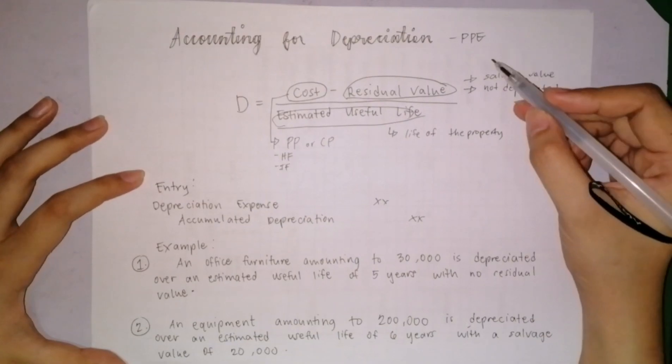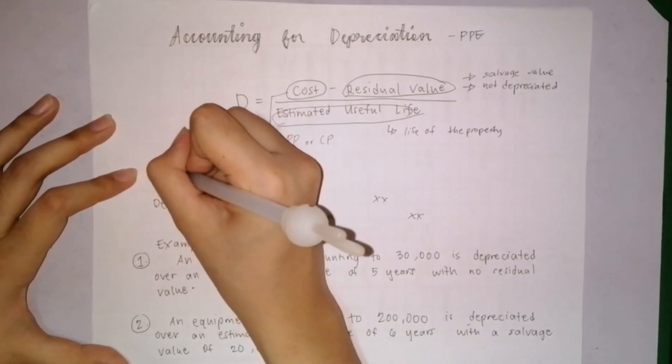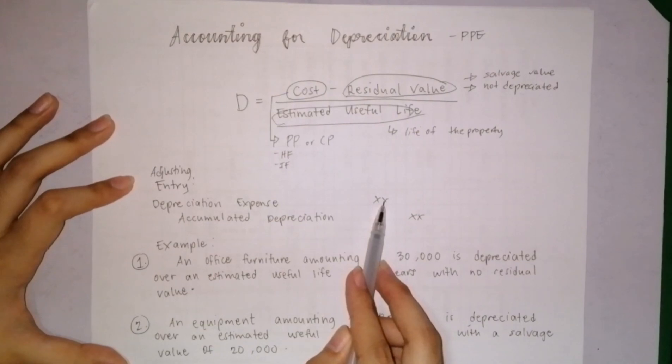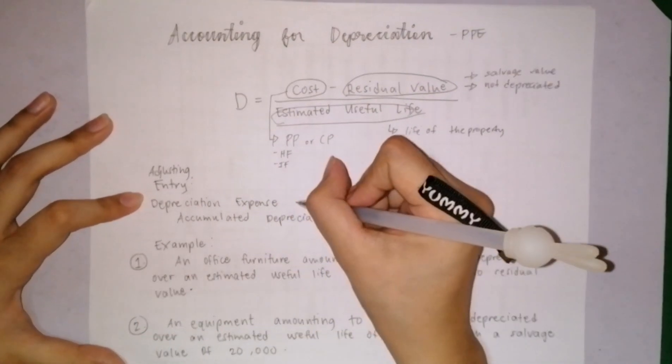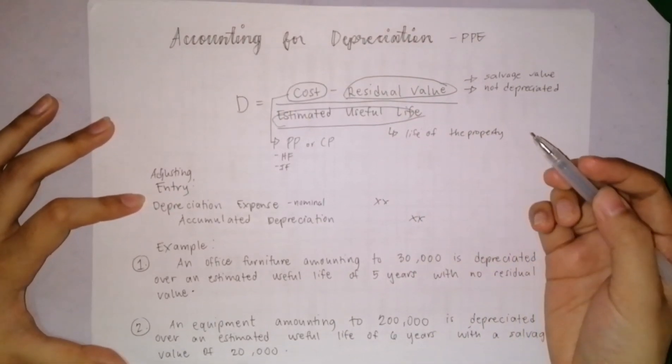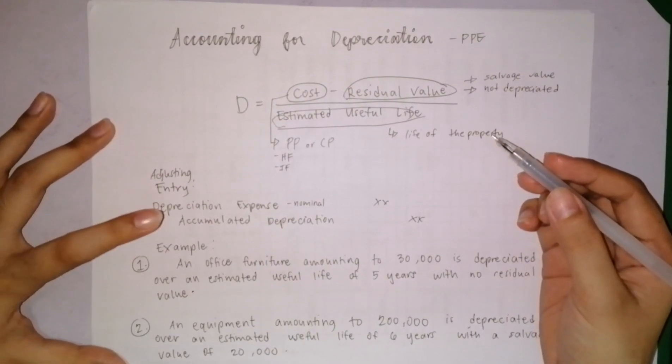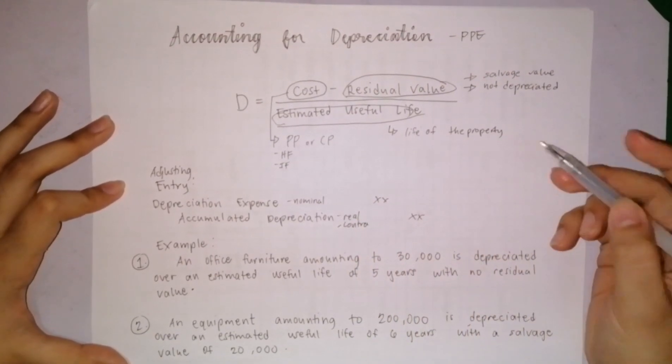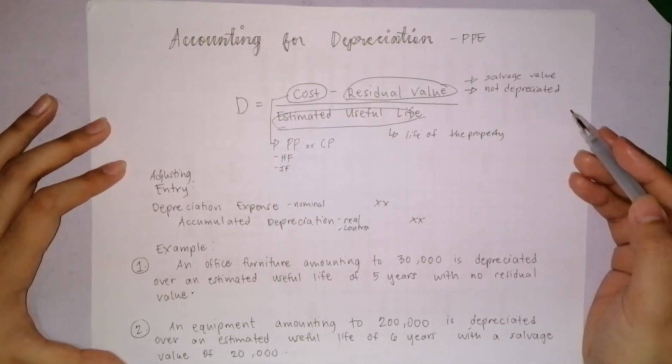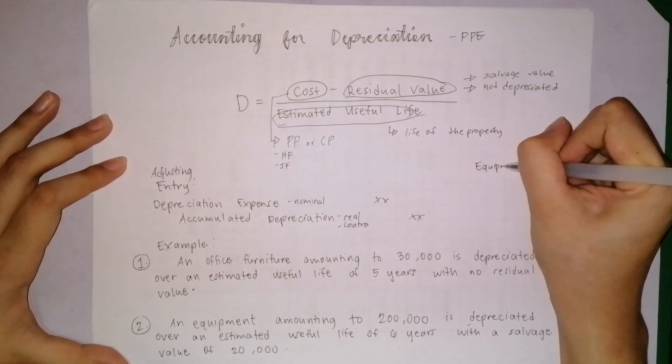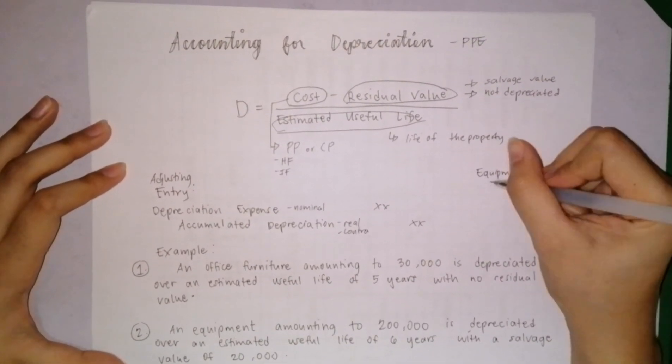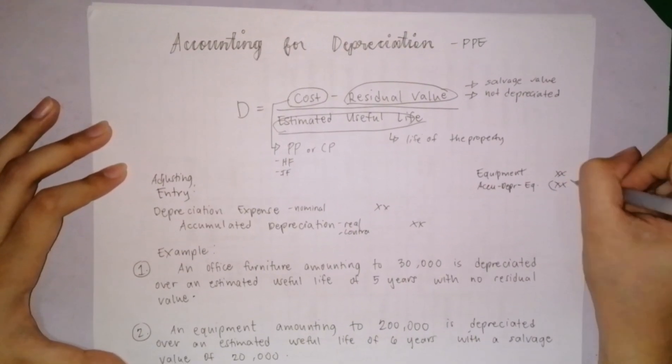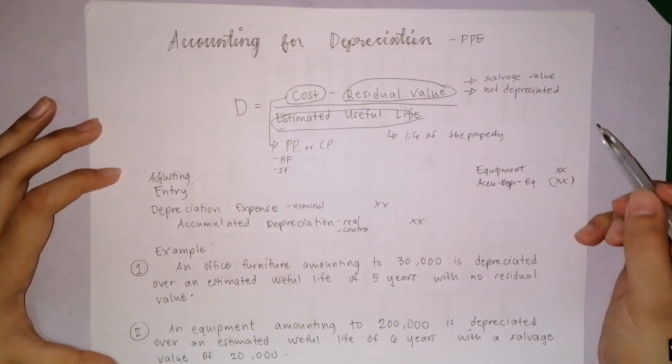After computing the depreciation for the year, we will now go to the adjusting entry to record the depreciation. We debit the depreciation expense and the amount computed, and credit accumulated depreciation. Depreciation expense is a nominal account closed every year through closing entries. The accumulated depreciation is a real account. However, it is a contra account, meaning it decreases an account. What does it decrease? Of course, the PPE. So the accumulated depreciation equipment will reduce the equipment account. Contra means a deduction.